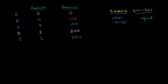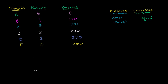And one more scenario: scenario F. If you spend all your time looking for berries, you're going to be able to get 300 berries a day on average. But since you have no time for rabbits, you aren't going to get any rabbits.